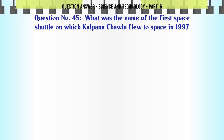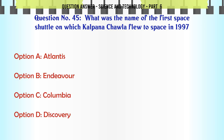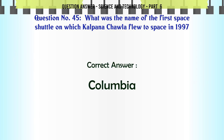What was the name of the first space shuttle on which Kalpana Chawla flew to space in 1997? A. Atlantis. B. Endeavor. C. Columbia. D. Discovery. The correct answer is Columbia.